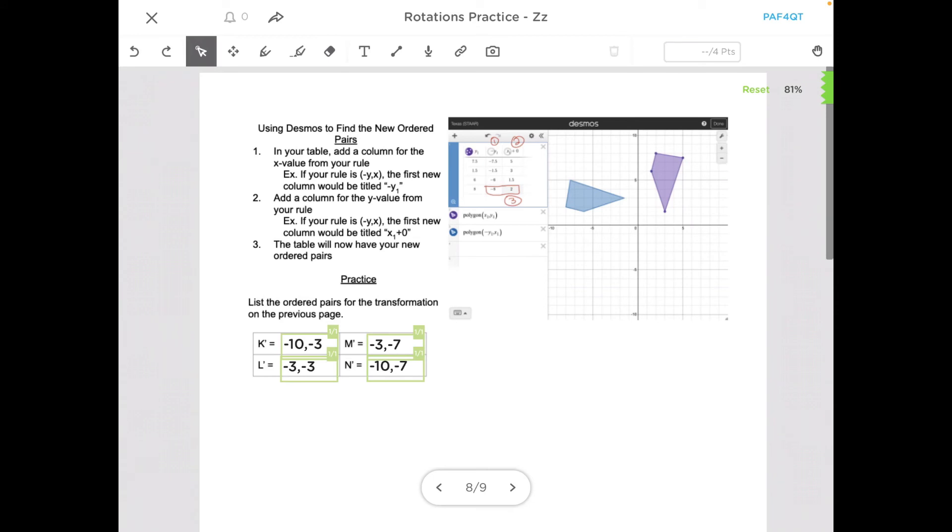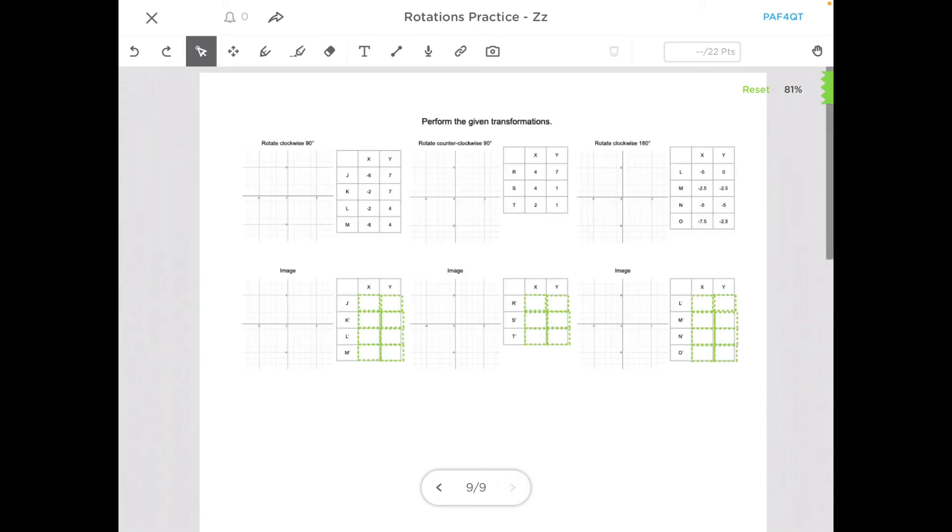All right, so we got all those right. So now it's time for you to practice here. Again, we're doing clockwise 90 degrees. The second one is counterclockwise 90 degrees, so that's a different rule, and then the last one says to rotate it 180 degrees.